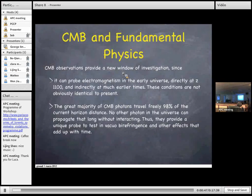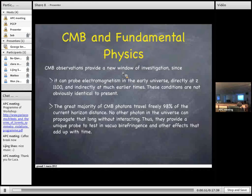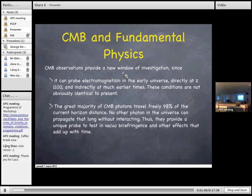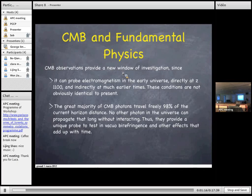CMB observations are useful for such investigation for at least two reasons. The first one, CMB is of course able to probe electromagnetism in the very early universe where the conditions are not obviously identical to present. Moreover, CMB photons have traveled almost the entire current horizon, so no other photons have been able to propagate that long without interacting.